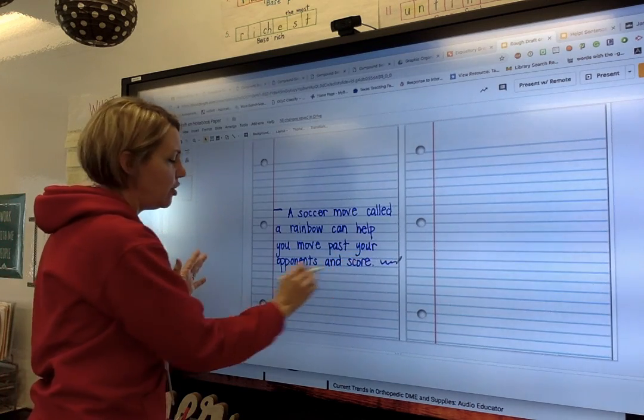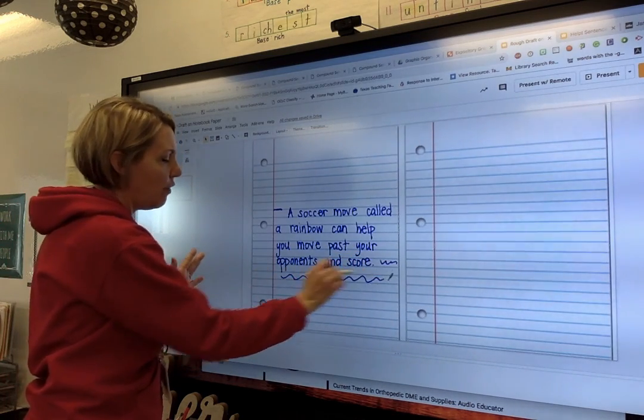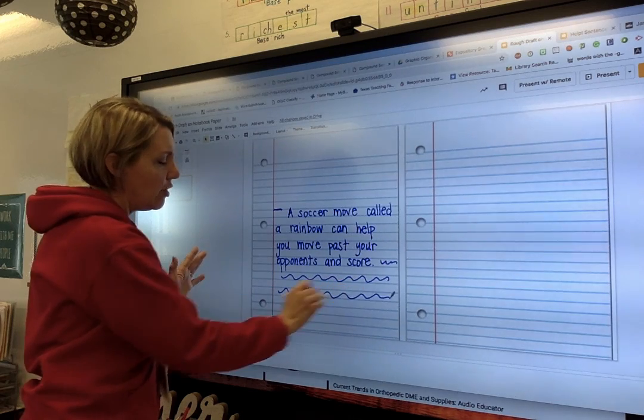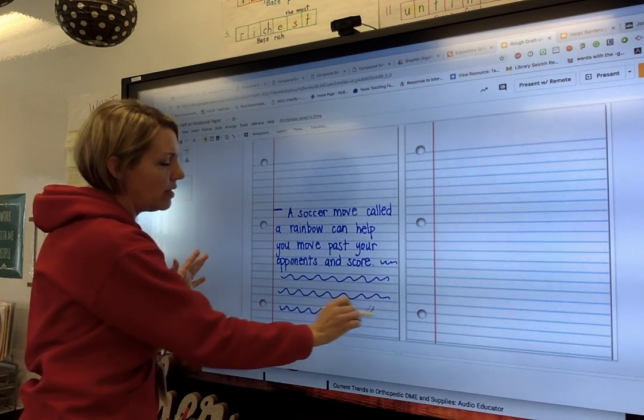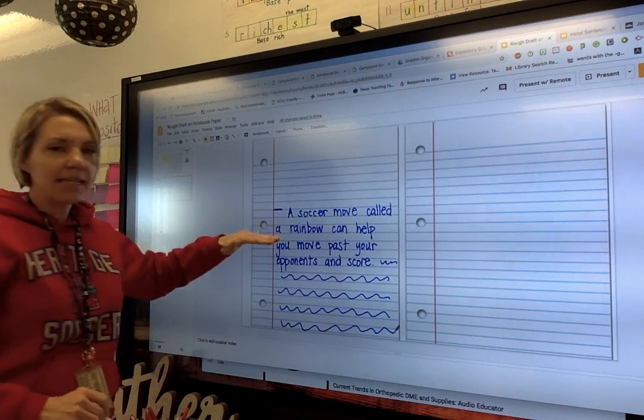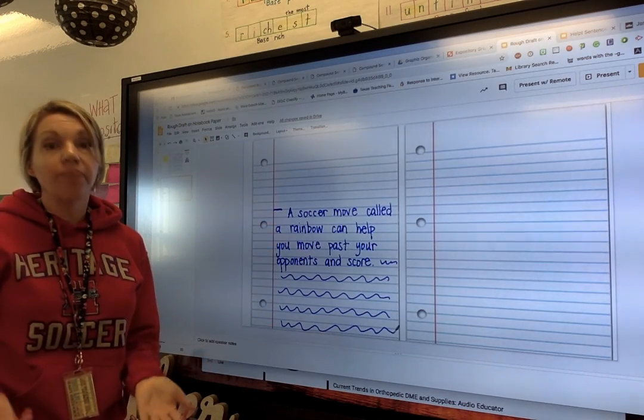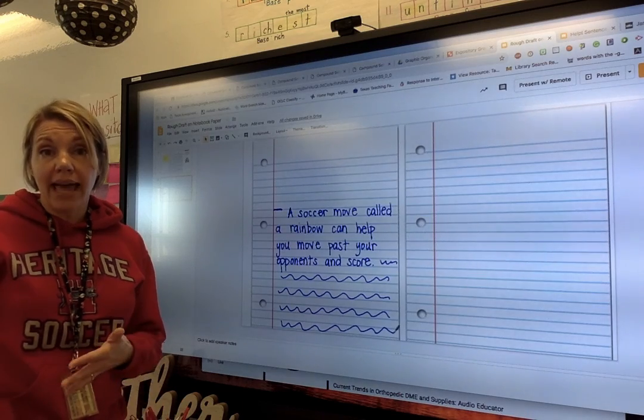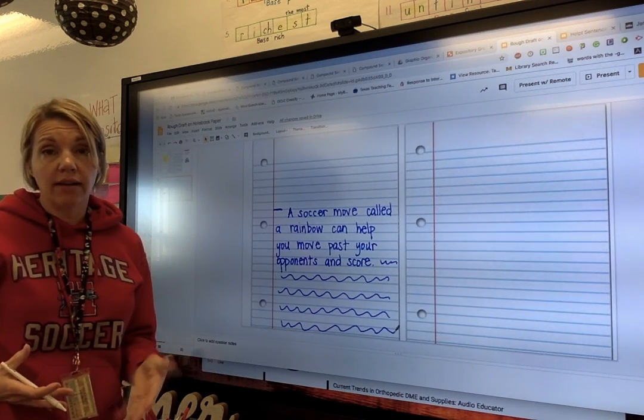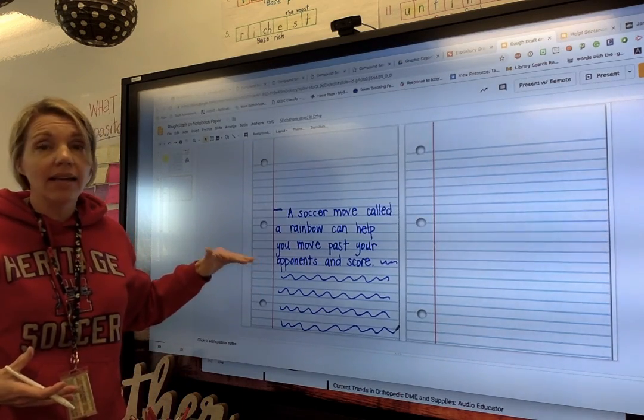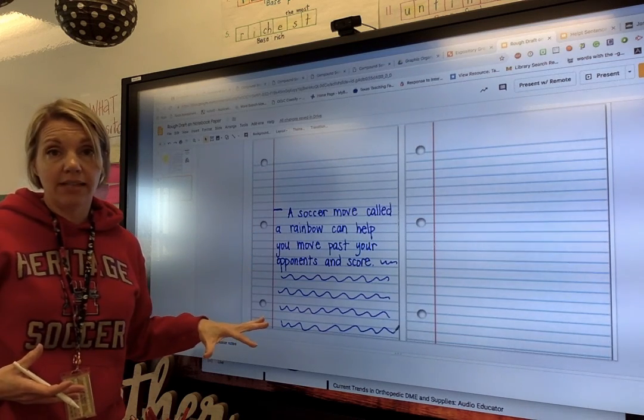So she's going to continue writing whatever her explanation is. Notice that I'm doing what to my lines? I am skipping lines. This is going to make it a lot easier whenever I go back to edit and revise later on. I can easily add things, take things away. It just makes my life easier.